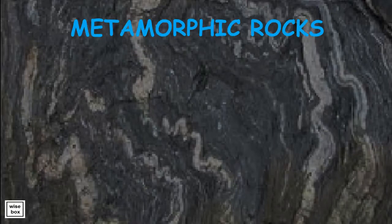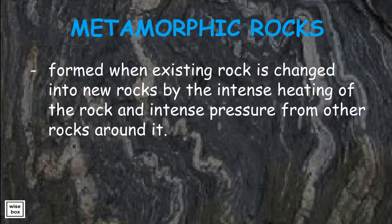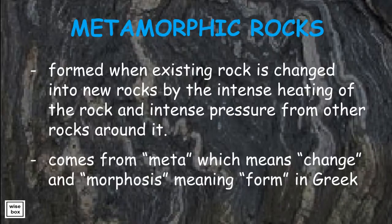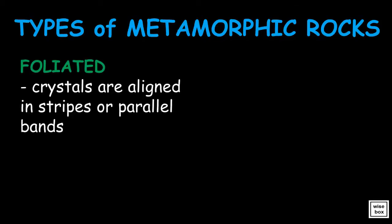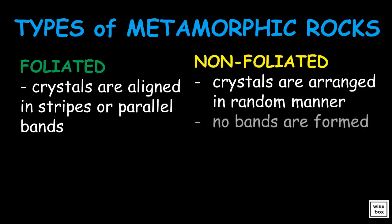The last rock type is metamorphic rocks. They are formed when existing rock is changed into new rocks by the intense heating of the rock and intense pressure from other rocks around it. The term 'metamorphic' comes from 'meta,' meaning change, and 'morphosis,' meaning form, in Greek. There are two types of metamorphic rocks: foliated, in which the crystals are lined in stripes or parallel bands; and non-foliated, in which the crystals are arranged in a random manner and no bands are formed.